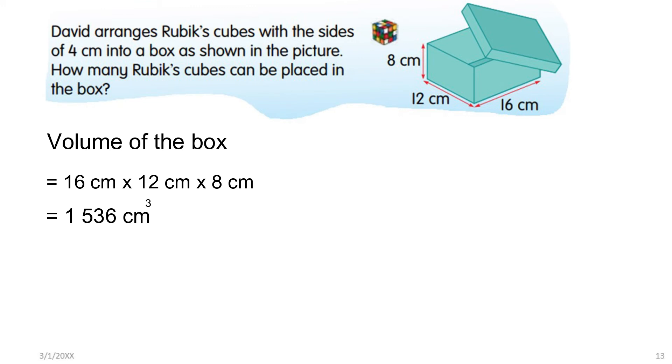Now find the volume of the Rubik's cube. Since it is a cube, all the sides are equal. So 4 centimeters multiply 4 centimeters multiply 4 centimeters, we will get 64 cubic centimeters.